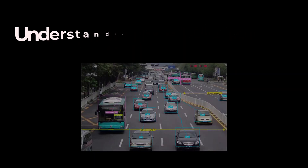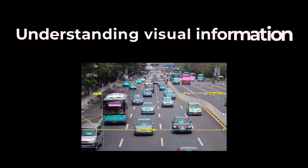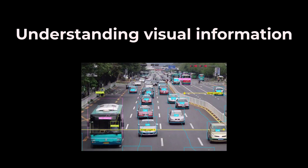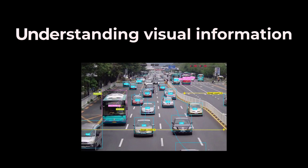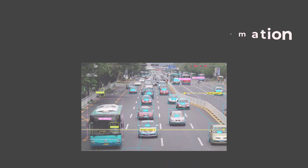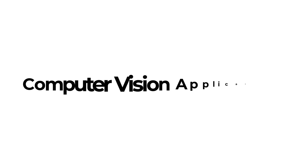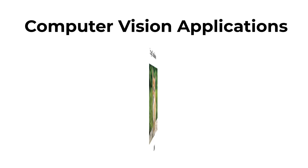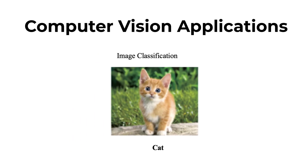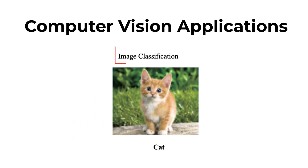Computer vision is a field of AI that enables computers to understand visual information. Here is what you can do with computer vision. To categorize an entire image, you can use image classification.